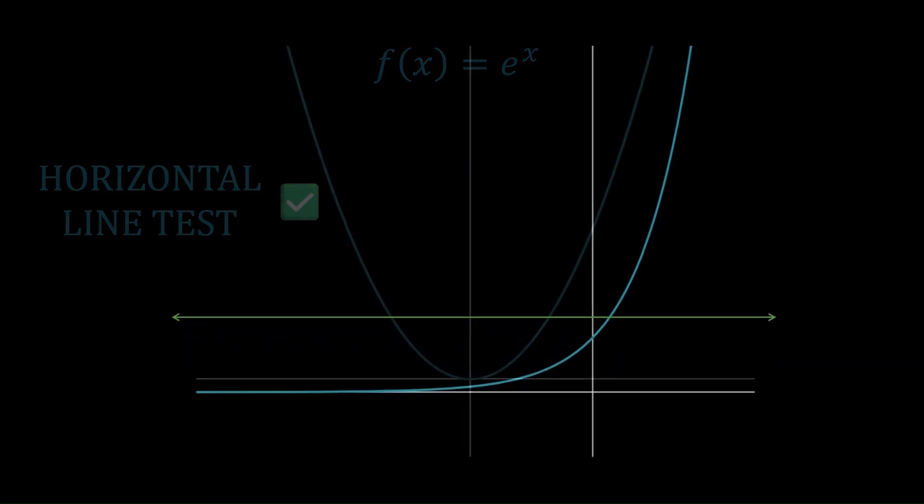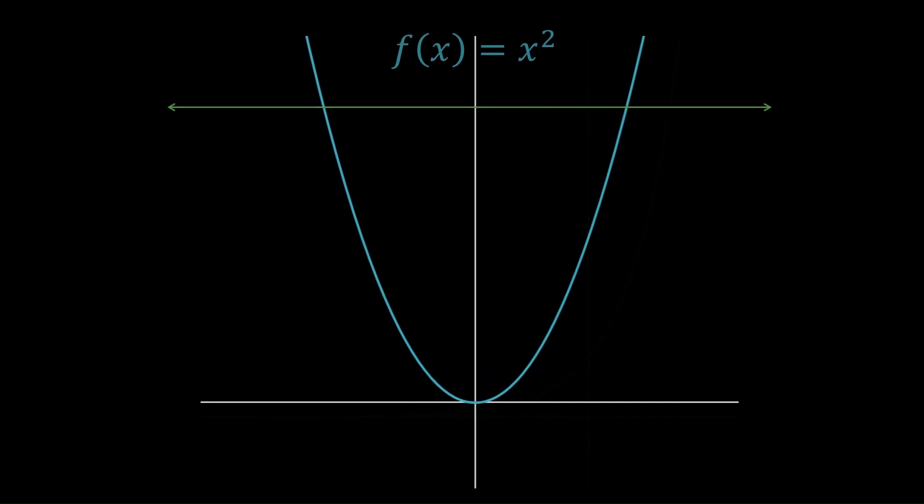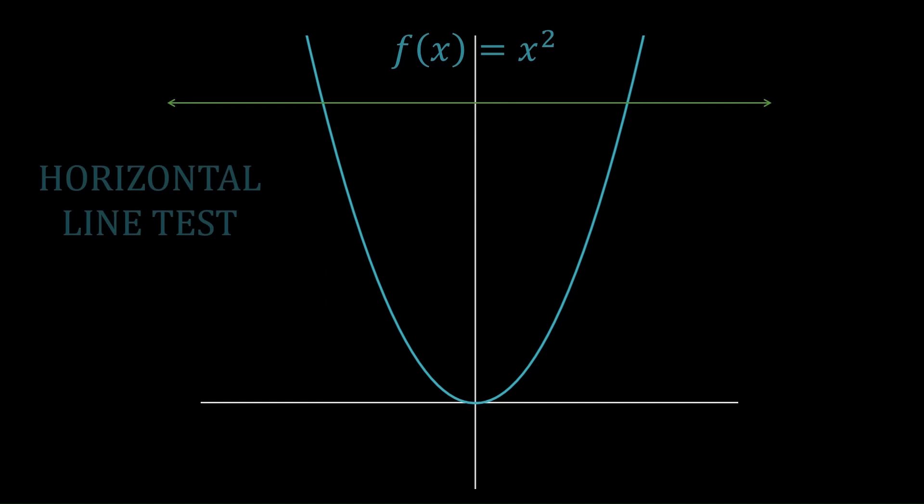If we look at the graph of x squared, we can see why it fails the horizontal line test. For example, look at this horizontal line. It clearly crosses the graph twice, which is obviously more than once. As long as it's possible for a horizontal line to cross the graph more than once, the function fails the horizontal line test. And that means it's not invertible. Okay, now we're going to the trig functions.